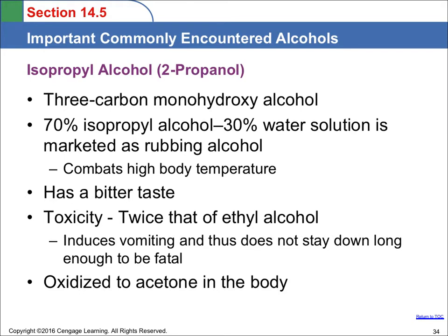The third alcohol we'll talk about is isopropyl alcohol, or 2-propanol. We have our propyl group and the alcohol group coming off of the middle carbon, so it's a three-carbon monohydroxy alcohol. 70% isopropyl alcohol mixed with 30% water is what is marketed as rubbing alcohol. It can also be used to combat high body temperature because it evaporates very quickly, leaving a cool feeling on the skin. It does have a bitter taste. Its toxicity is twice that of ethyl alcohol, but it induces vomiting and therefore can't stay down long enough to be fatal. If it were oxidized in the body, it would produce acetone, but because it causes vomiting, it doesn't stay in the system long enough to be broken down.